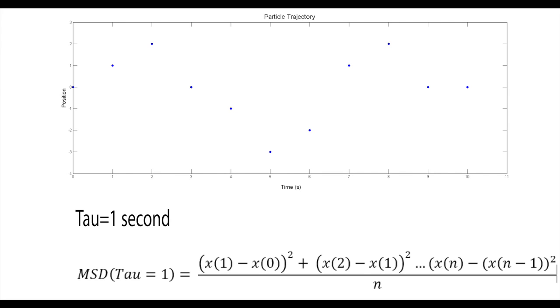So let's say we're using a tau value of one. This means that we're going to take points that are separated by one second and keep going until we go through all the points. Let's start here with these two points. We take the difference, square it, and then we're going to move on to the next two points. And the next two until we're done with the whole data set. And this will be the MSD for a tau value of one.